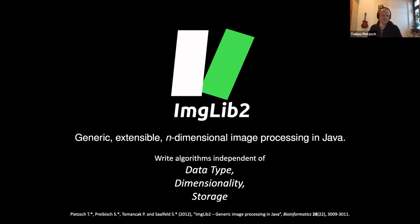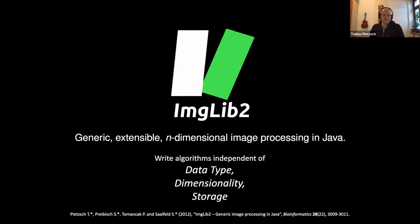The underlying technology that facilitates these concepts in Big Data Viewer is ImgLib2, a generic image processing library developed together with Stephan Saalfeld and Stephan Preibisch. ImgLib2 makes these concepts possible not just in Big Data Viewer, but in a generic way, so you can plug in your own data sources, image modalities, and backends, and everything will work seamlessly without changing anything in the Big Data Viewer code.